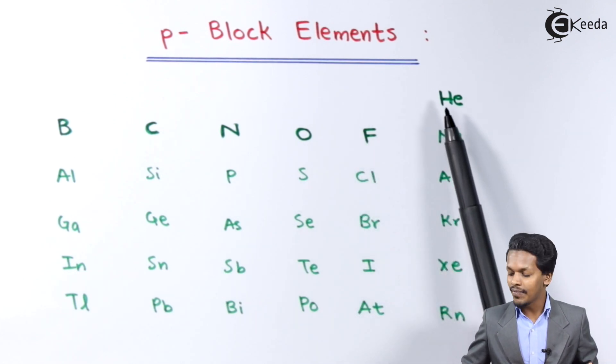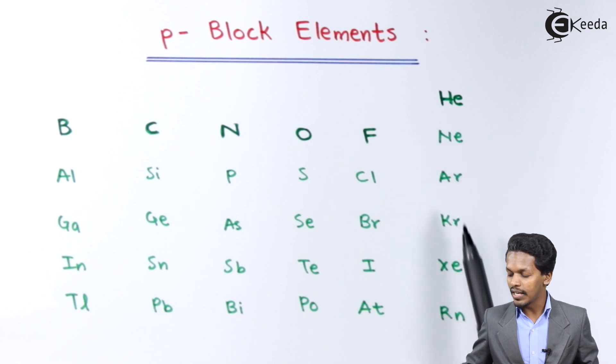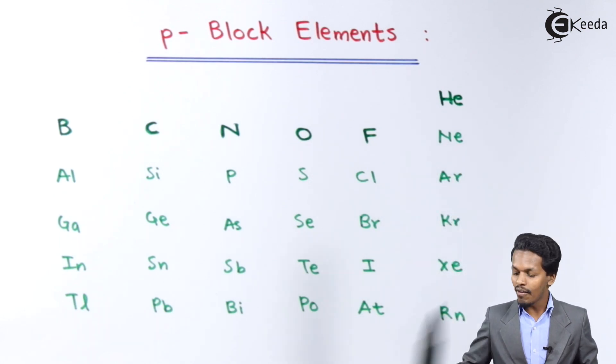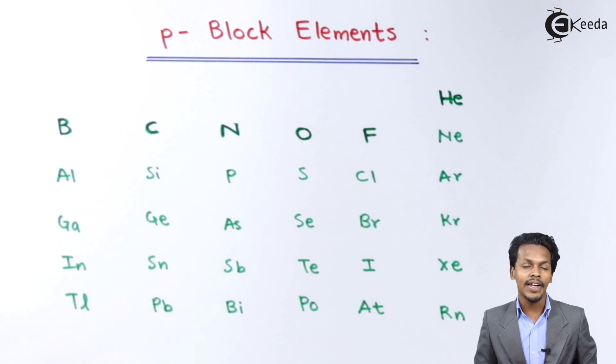And for noble gases we have Helium, Neon, Argon, Krypton, Xenon and Radon. So these all are basically P-Block elements, and now we are mainly concerned with group 15, 16, 17 and 18.